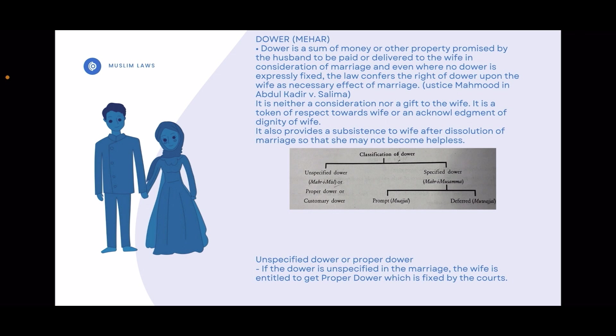Unspecified Dahr is called Proper Dahr or Customary Dahr. Specified Dahr has two types: Prompt Dahr and Deferred Dahr, i.e., Muvajjal. Now we are going to see the meaning of each classification one by one.